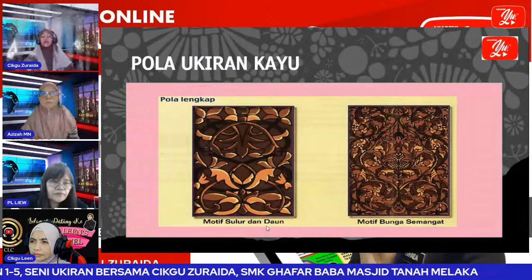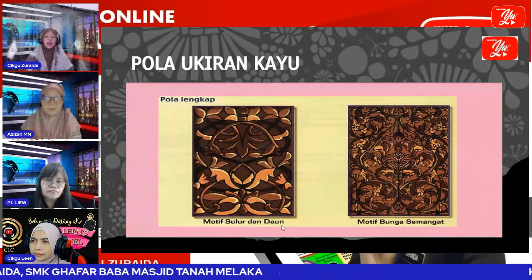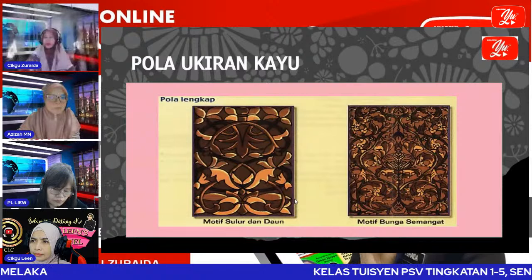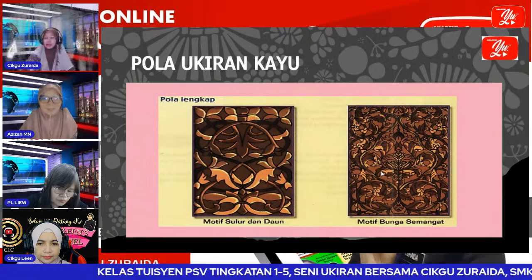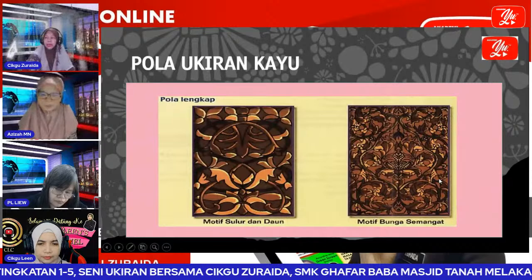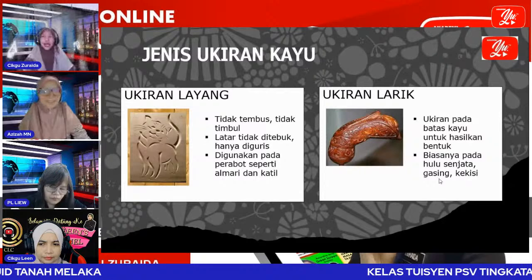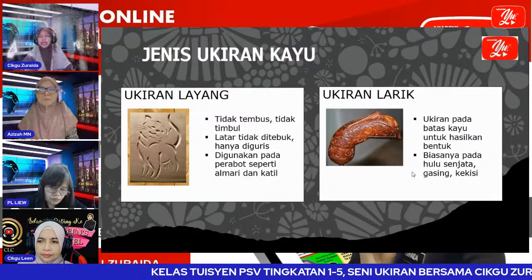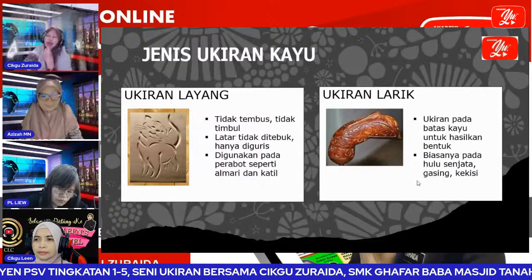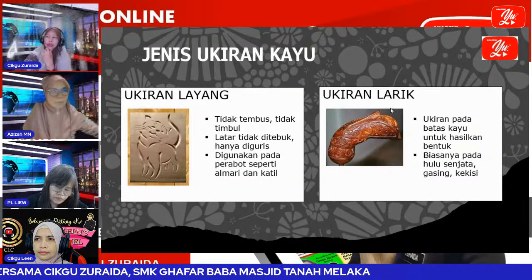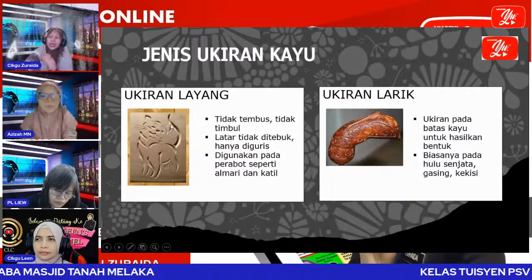Jenis ukiran kayu ada beberapa jenis. Saya mulakan yang paling mudah dulu. Inilah ukiran layang — layang maknanya kita ukir sikit-sikit saja. Hasil ukiran dia rata, hanya bahagian-bahagian tertentu sahaja yang diguris — dia tidak tebuk, hanya diguris sahaja. Tidak timbul, dia rata sahaja, tapi kita masih nampak ada bahagian-bahagian yang diukir.